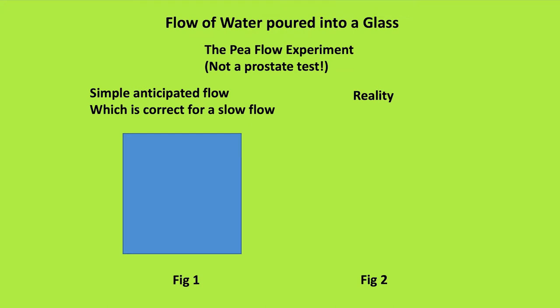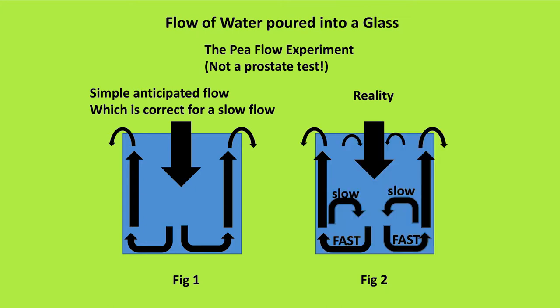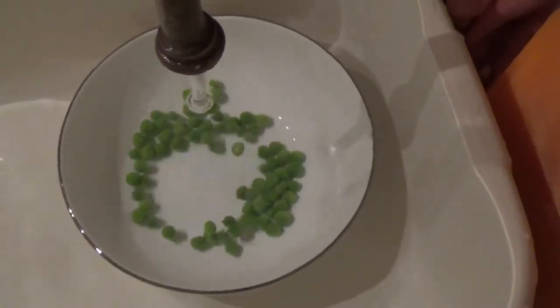Flow of water poured into a glass: simple anticipated flow, which is correct for a slow flow — and that's exactly what we would expect. The reality is that if we increase the flow rate to a faster flow, we end up with a vortex at the bottom of the glass. Here we have the washing up bowl in the sink and inside a bowl. Notice the peas stay essentially within the vortex. There's clearly a continual flow of water out of the washing up bowl as well — of course, the odd pea will escape.